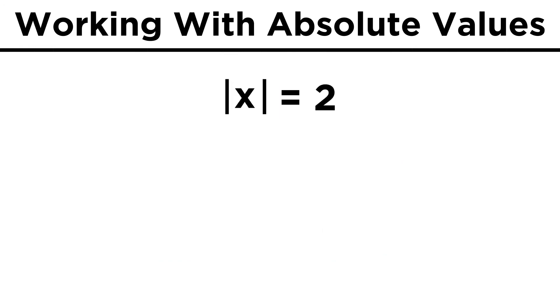When we encounter absolute values while solving equations, it just adds another step. If we have the absolute value of x equals two, that means x could be two or negative two, so there are two solutions to this equation.